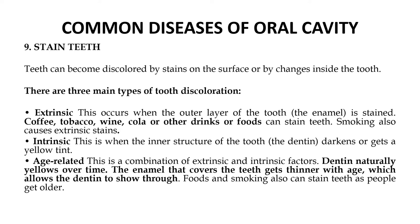Another problem associated with the oral cavity is the staining of teeth. Teeth can be discolored by stains on the surface or by changes inside the tooth. There are basically three main types of tooth discoloration. The first is extrinsic — as the name suggests, it is on the outer part of the tooth. Drinks like coffee, tobacco, wine, cola or other types of drinks can stain the teeth. Smoking also causes extrinsic stains.